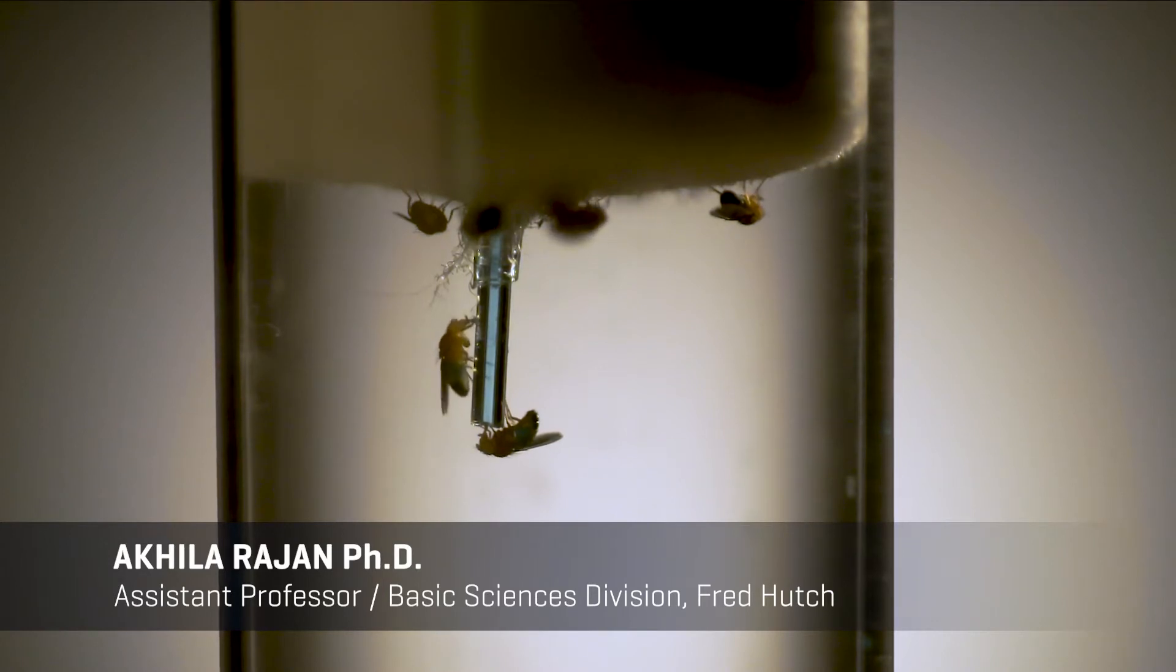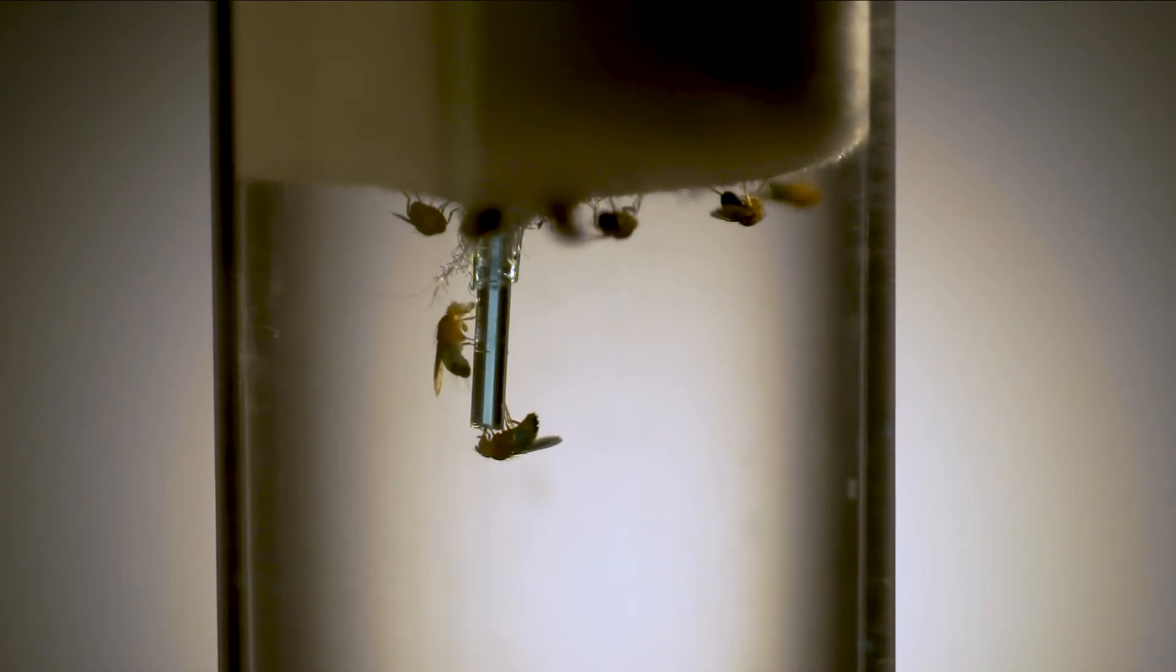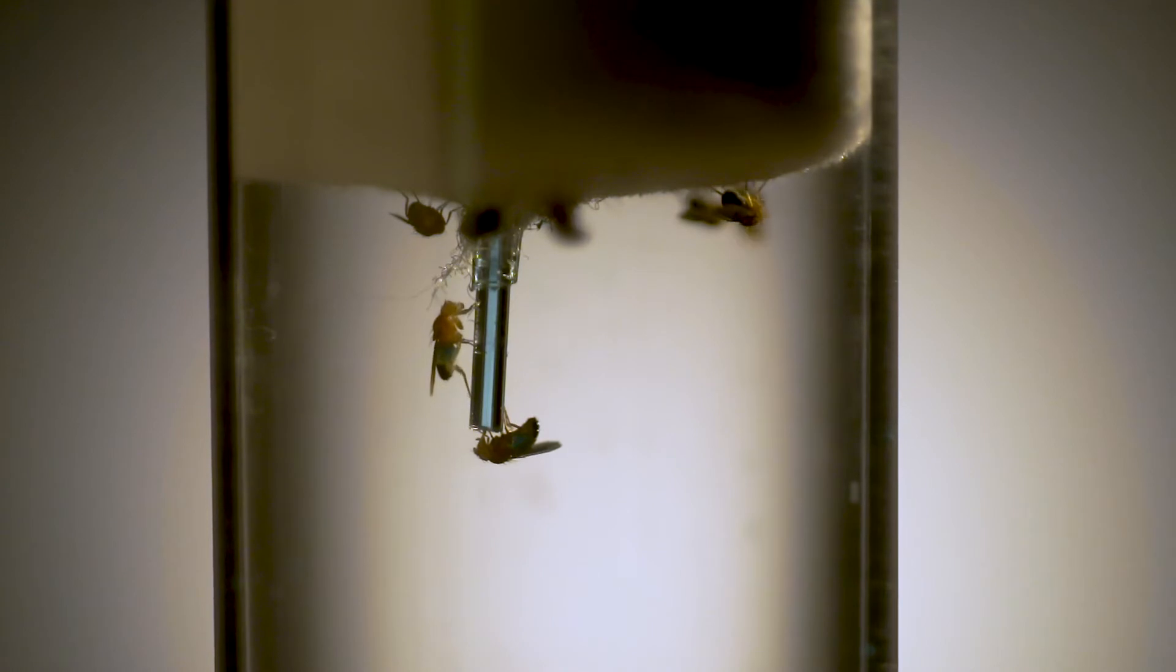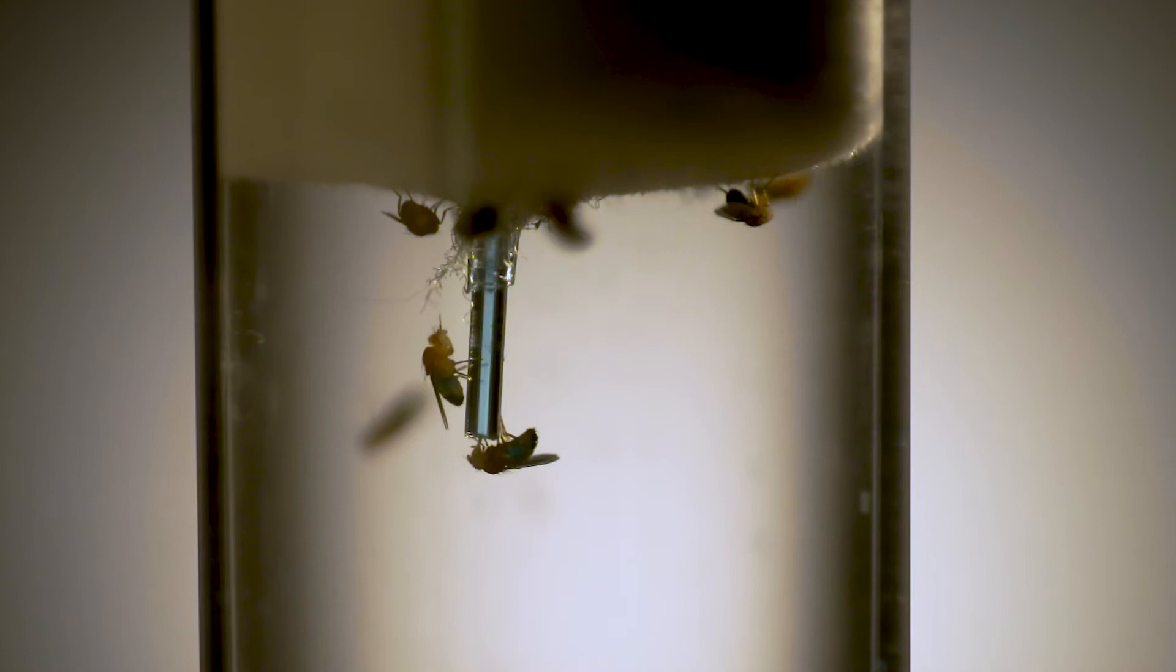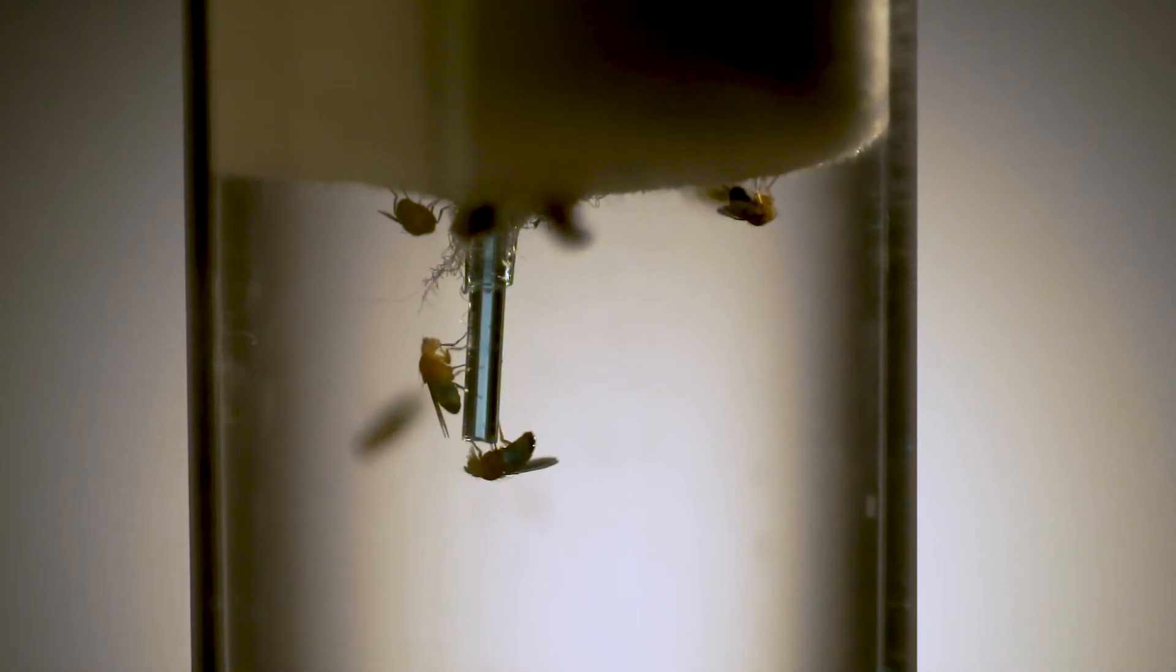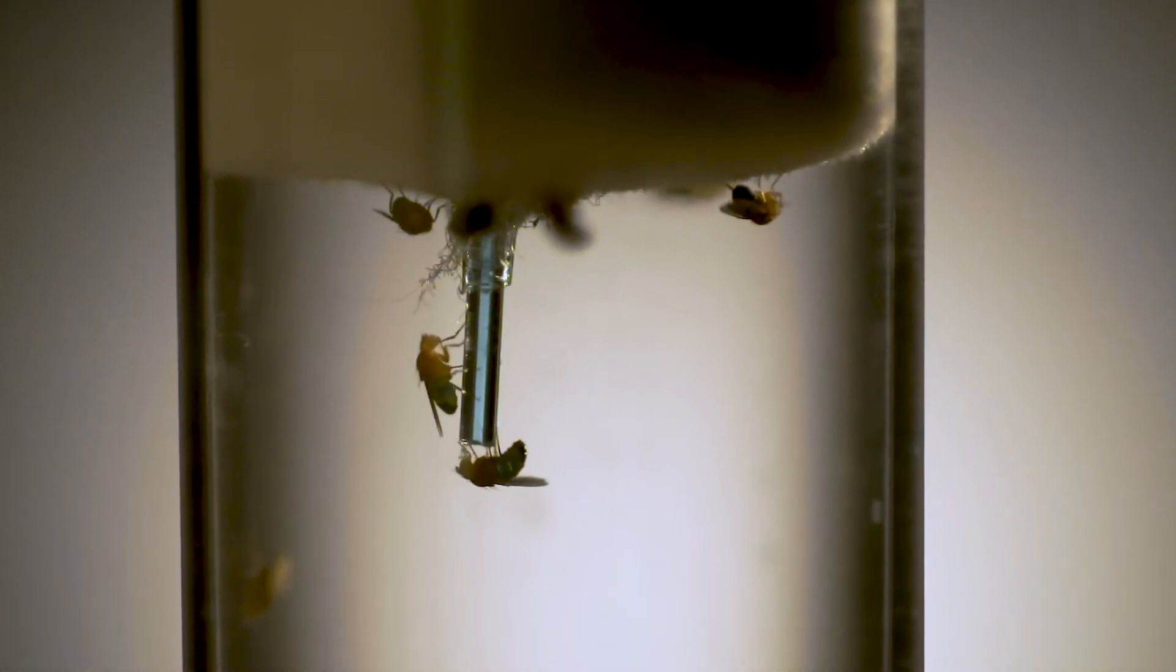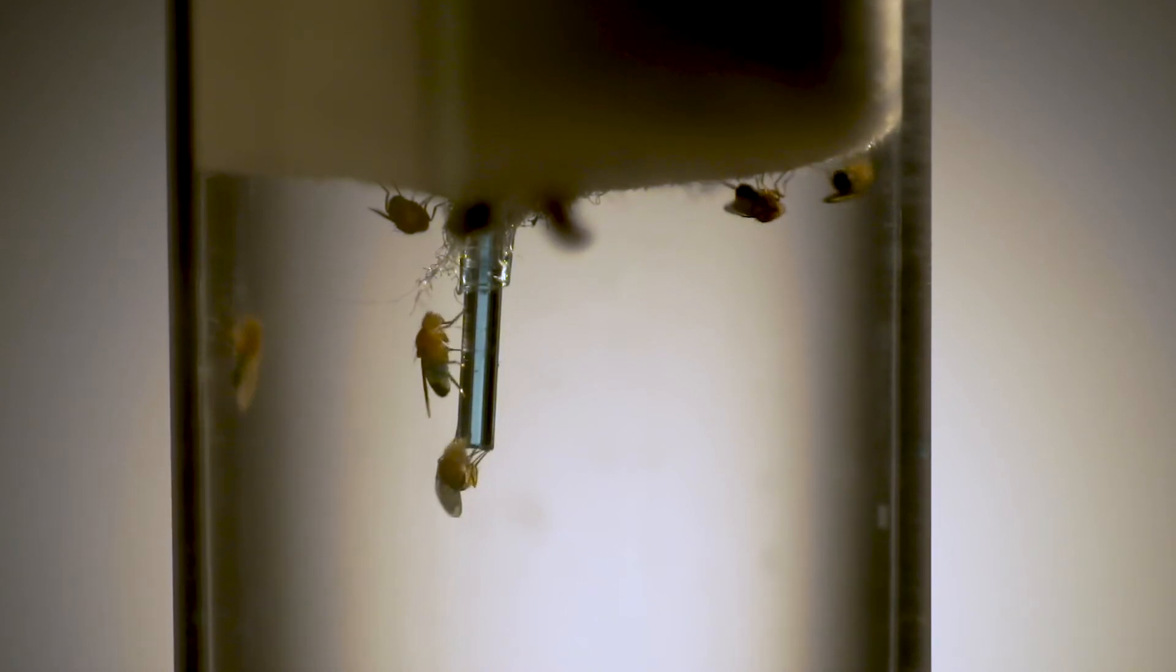My lab has been looking into how flies sense nutrient stores, specifically fat stores, and how they communicate to the brain. We knew from our prior work that there was a certain region in the brain in which this crosstalk occurred, but exactly the synaptic point of contact and how this was regulated was unclear.